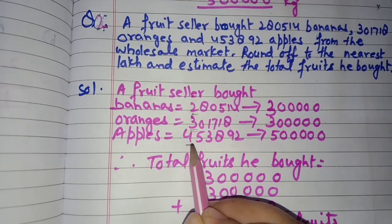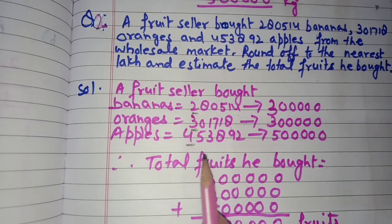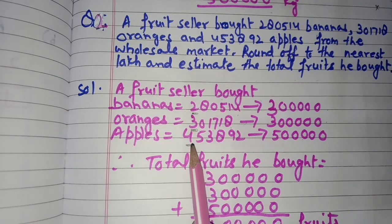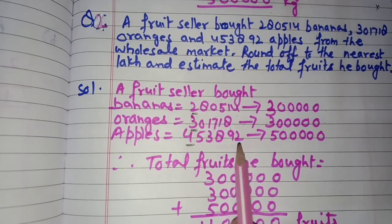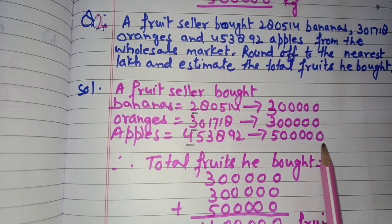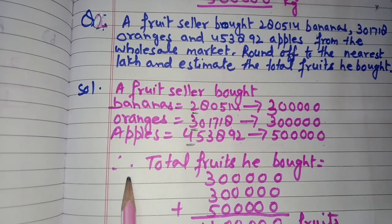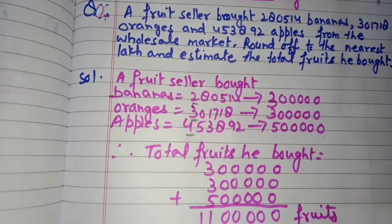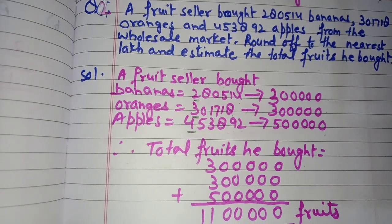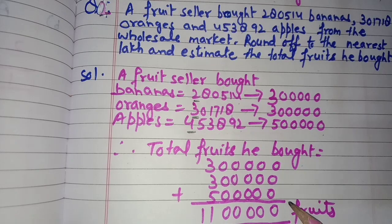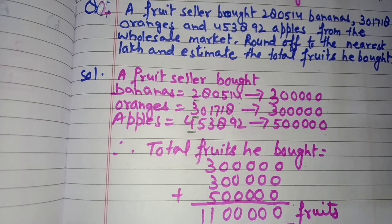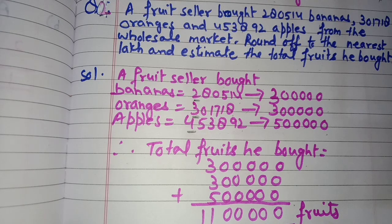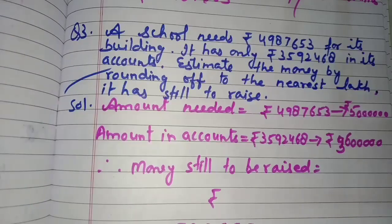Apples: 4,53,892, rounded off to the nearest lakh gives 5 lakh. Now we find the total fruits: 3 lakh (bananas) + 3 lakh (oranges) + 5 lakh (apples) = 11 lakh. So the estimated number of fruits the seller bought is 11 lakh fruits.